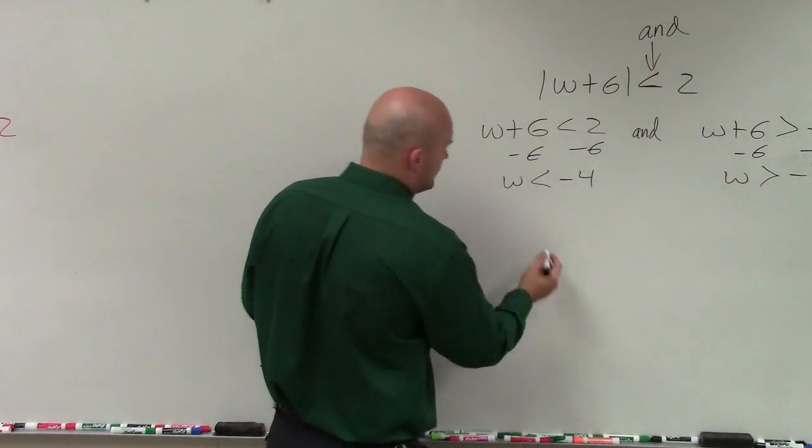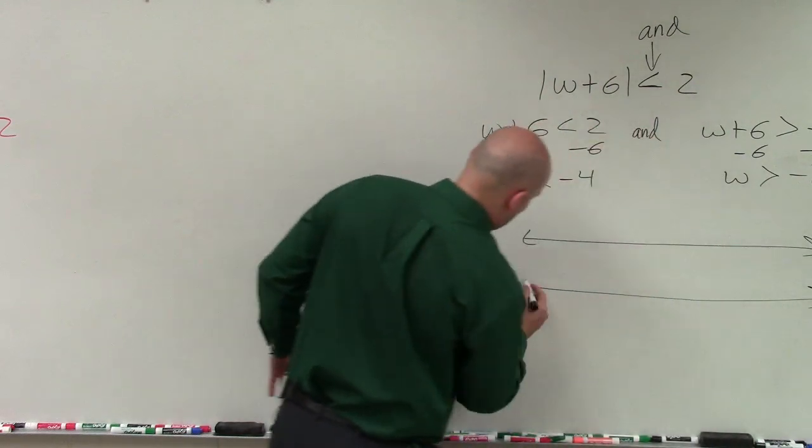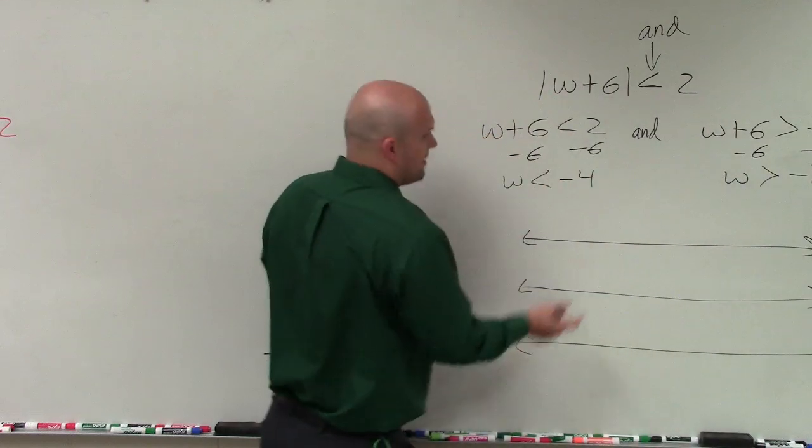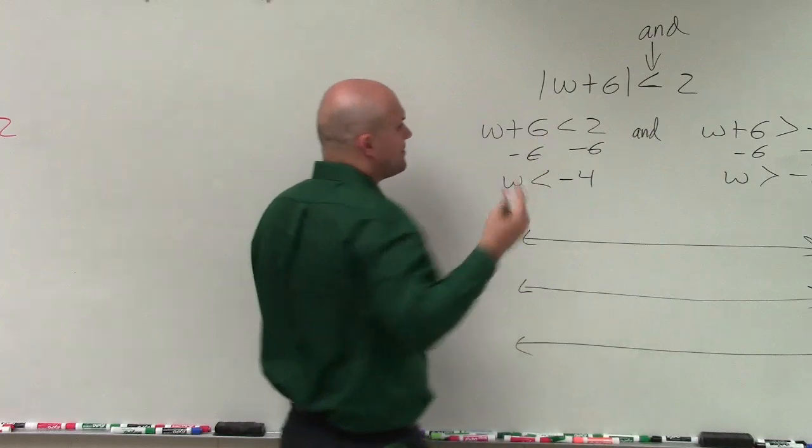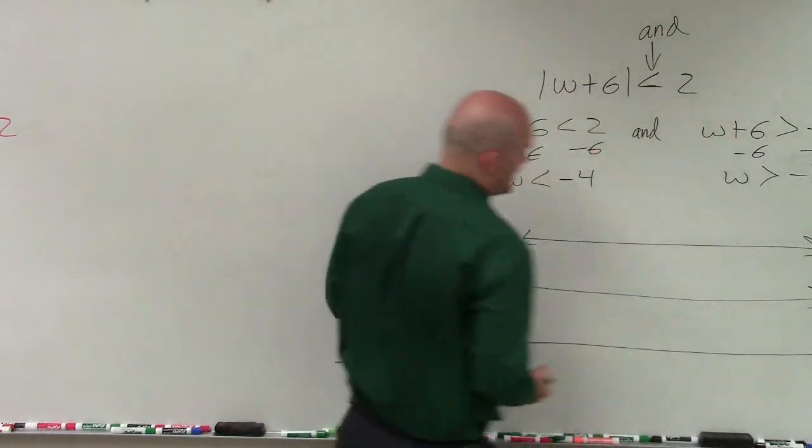Now I think what's helpful when you're graphing compound inequalities in the form of and, is to graph both inequalities separately on the same number line or on different number lines and then combine them with their intersection. Because remember, and represents the intersection of your two inequalities, represent that on your final one.